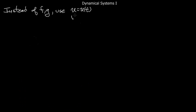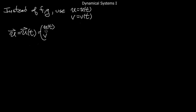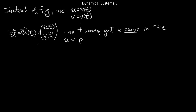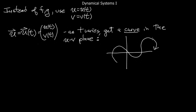Instead of f and g, it's more common to use other letters, maybe u and v. We have two functions of t, u and v, and we make the vector-valued function u⃗(t) = [u(t), v(t)]. What that means is for every t you get a vector by plugging it into u. As you vary t, you get a curve in the u-v plane — a coordinate plane whose axes are u and v — and for any given t you get a point in this plane, and as you vary t you move around and trace out a curve.